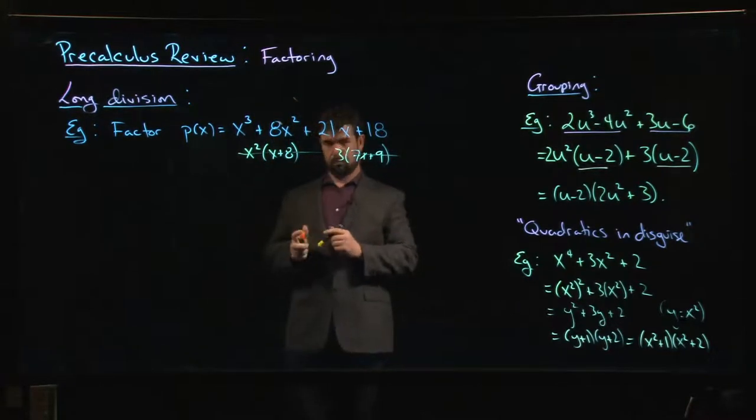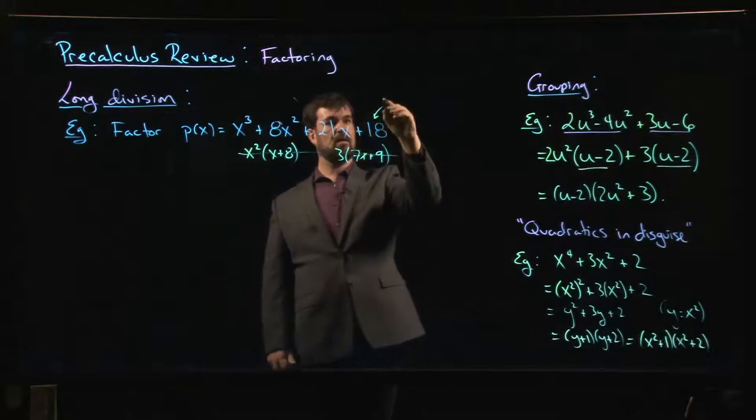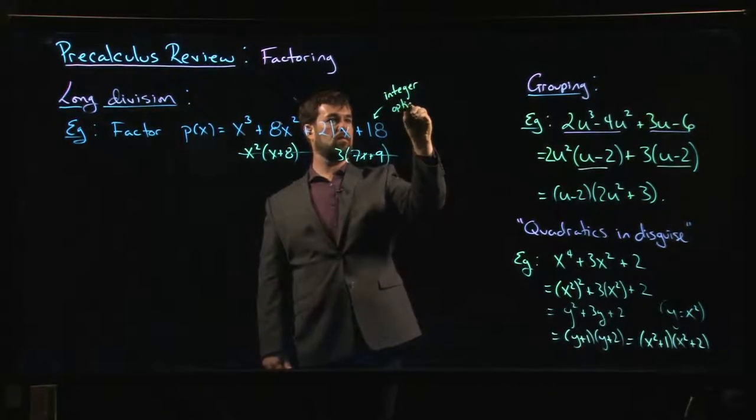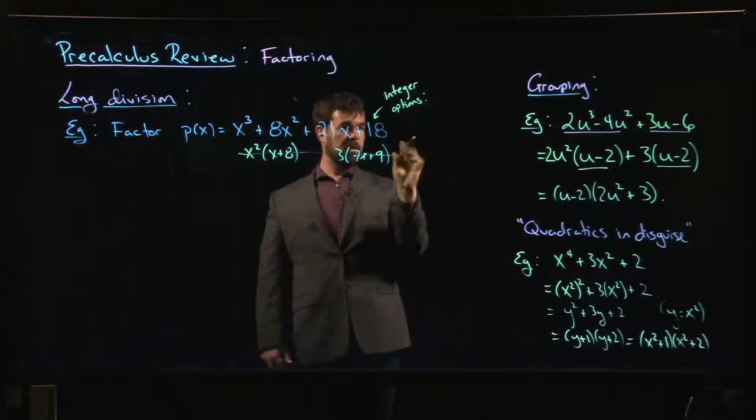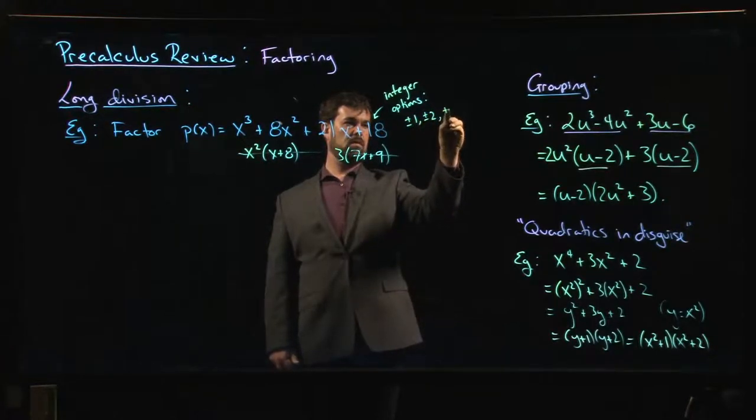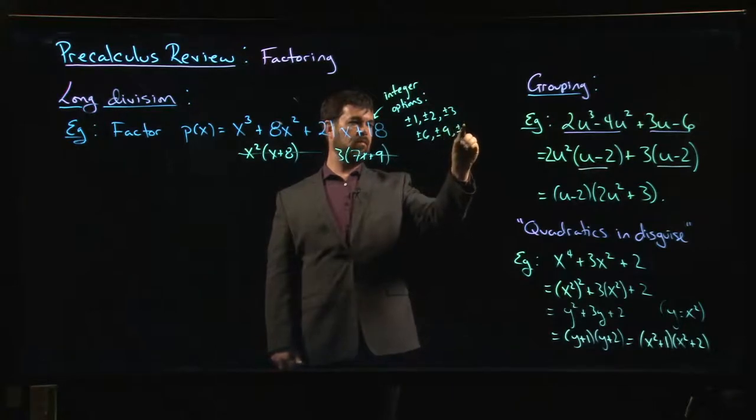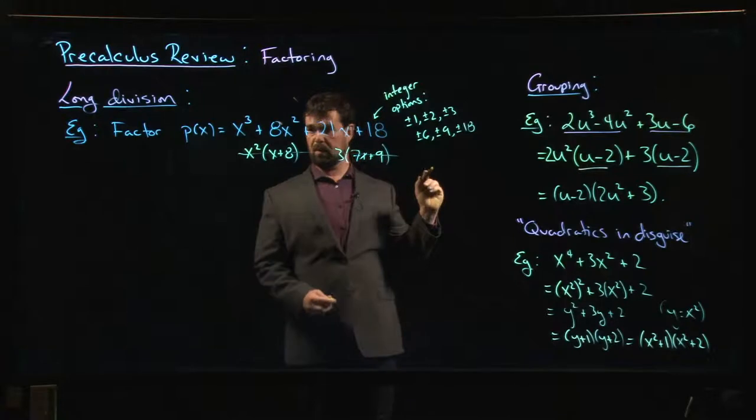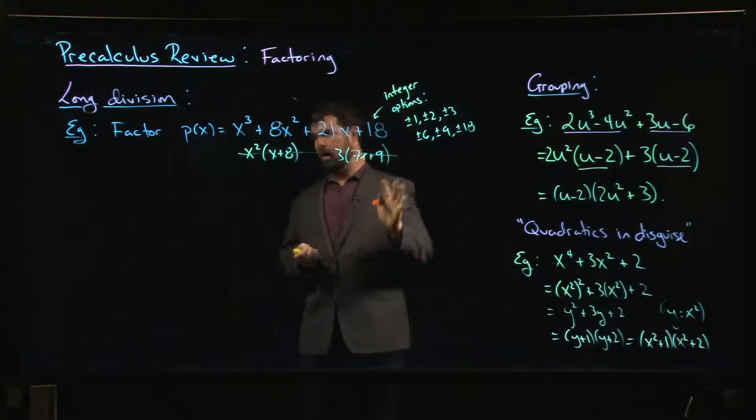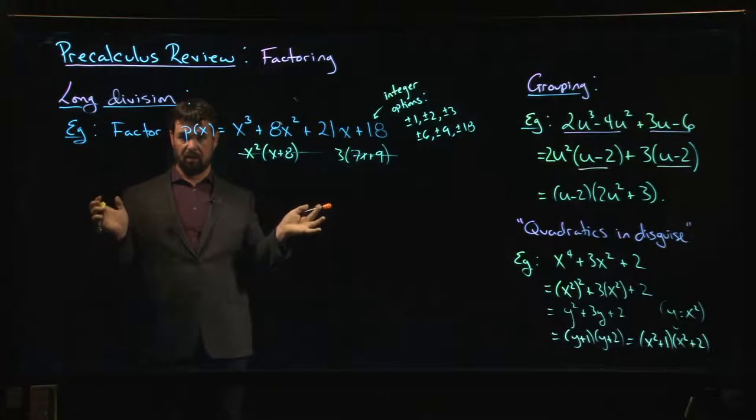What else are we going to try? Well, we can go to rational roots theorem. What are the possible factors here? So possible integer roots. The possible integer roots are going to be the numbers that divide evenly into 18. Plus or minus 1, plus or minus 2, plus or minus 3, plus or minus 6, plus or minus 9, plus or minus 18. That's 12 possibilities. So we hope we don't have to try all of them. We don't want to spend too long on pre-calc videos. We want to get into calculus.